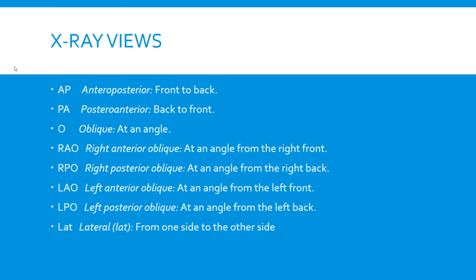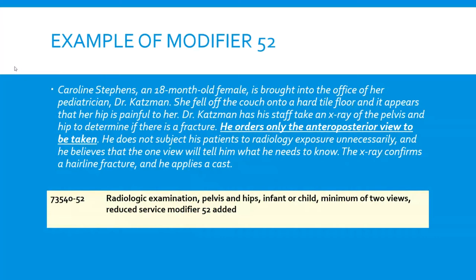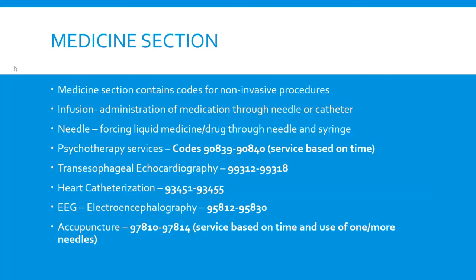Knowing the difference between technical and professional components, some anatomy and abbreviations you'll see with x-ray views: AP means anterior-posterior, front to back; PA means posterior-anterior, back to front. You're probably going to see a question pertaining to these specifically. For radiology, you're going to see a question that uses modifier 52, from CPT Appendix A, and this is for reduced services. For example, an exam on an 18-month-old female where the physician orders an anterior-posterior view only of the pelvis. The code would be 73540 — radiological exam, pelvis and hips, infant or child, minimum of two views. Since he's ordering only one view, he appends modifier 52 for reduced services, which will bring down the reimbursement rate of that code.